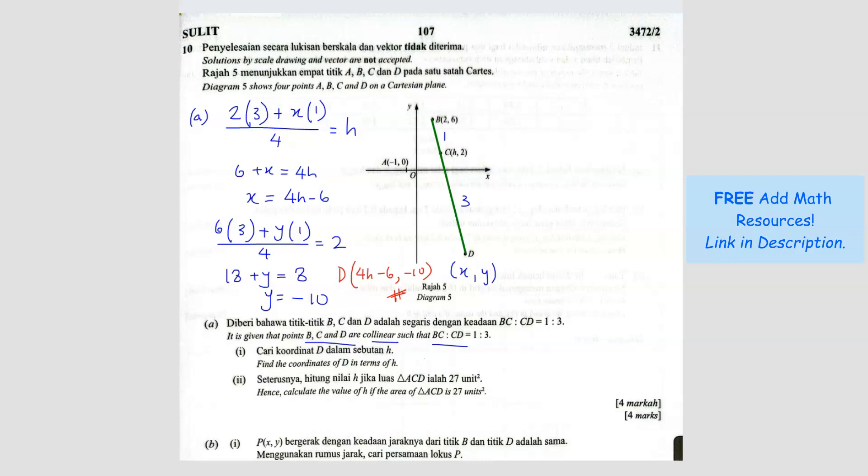Next, A2. What is A2? Hence, calculate the value of H if the area of ACD is 27. So ACD is A is here, C is here, D is here. So this triangle. The area is 27. So same thing, we can use the formula.